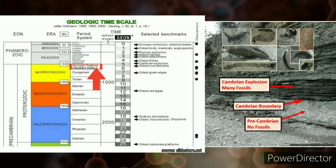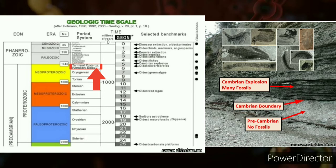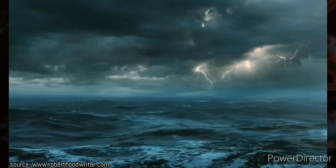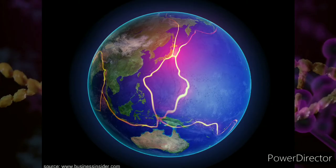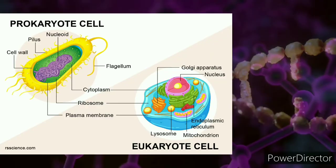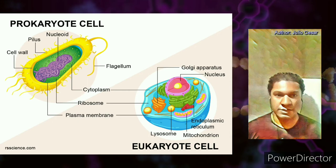The Precambrian–Cambrian transition records one of the most important intervals in the history of life, as it encompasses the advent and diversification of metazoans, dramatic paleooceanographic and atmospheric changes, and major plate tectonic reconfigurations.